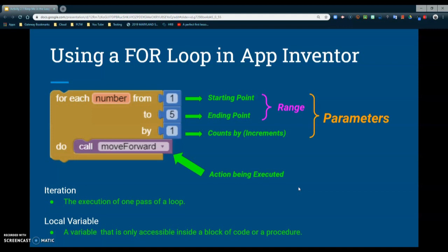You have the from, the to, and the by. Your range is set from the from to the to portion of that code. Basically we have from one to five, which means we're starting at number one and our loop is going to count until we get to number five. The by portion tells us how many we're going to count by. In this case we're counting by ones, so my loop would be counting one, two, three, four, five.